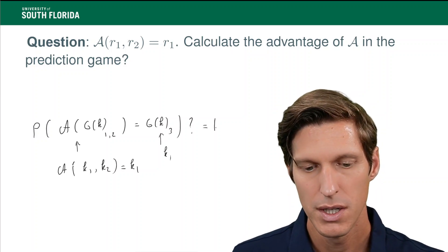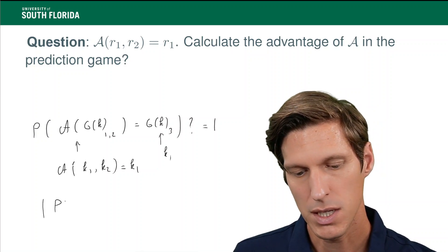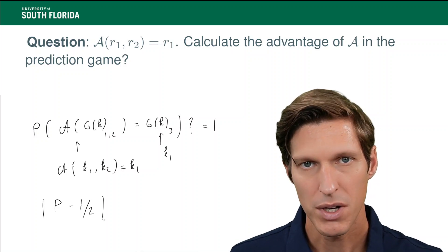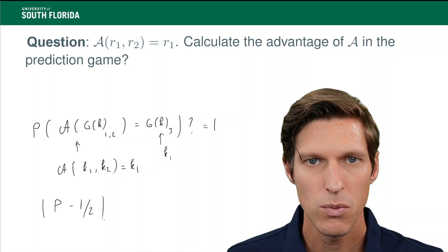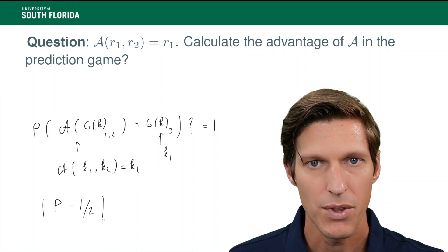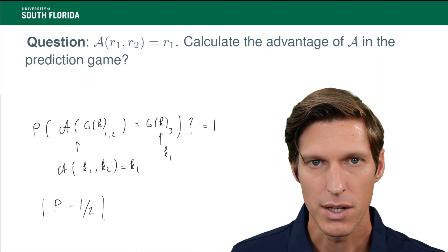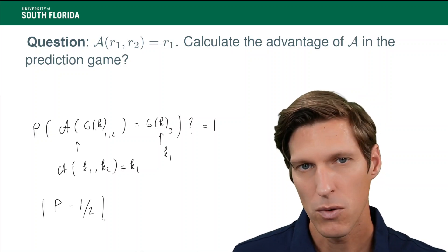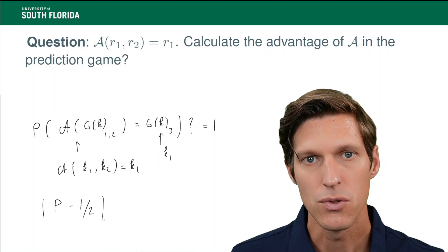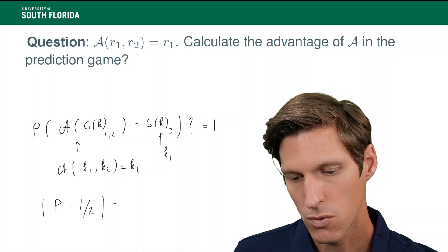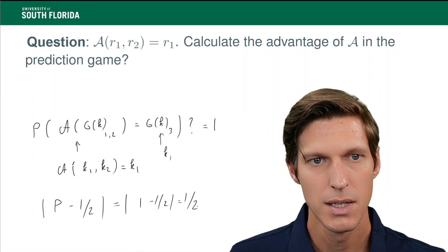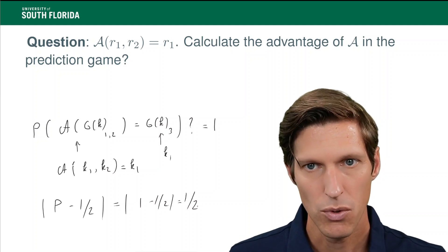So the probability that the adversary successfully predicts the third bit is equal to 1. The advantage here has a slight subtlety: if I call that probability P, the advantage is the absolute value of P minus one-half. So if you have probability 0 or probability 1, you maximize your advantage, but it's never above one-half with this definition — because a random guesser always has a 50% chance of guessing the next bit. In our case, the advantage is 1 minus one-half, which is one-half. That's about as good as it can get. This means that pseudorandom generator is entirely predictable and therefore insecure.